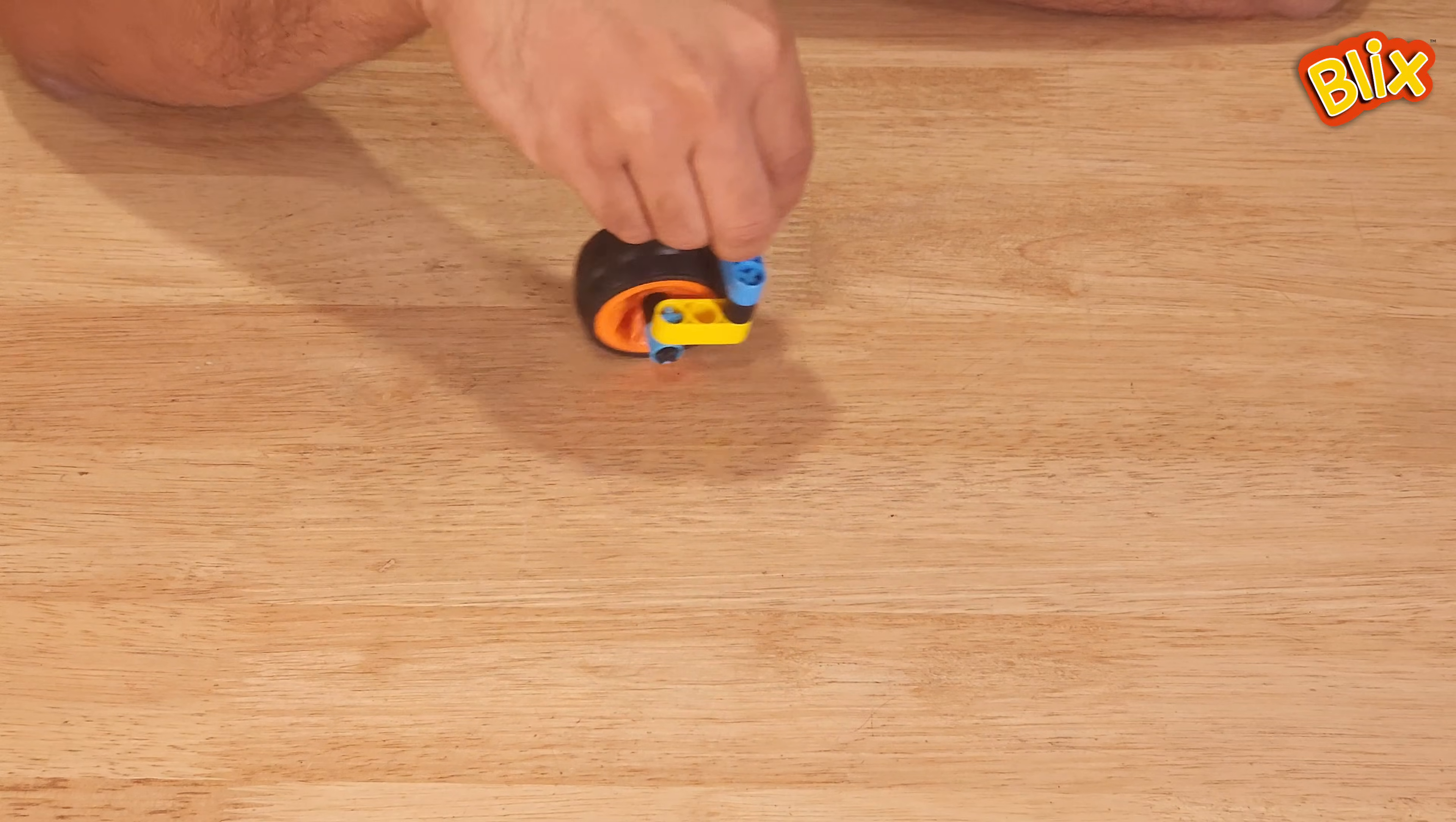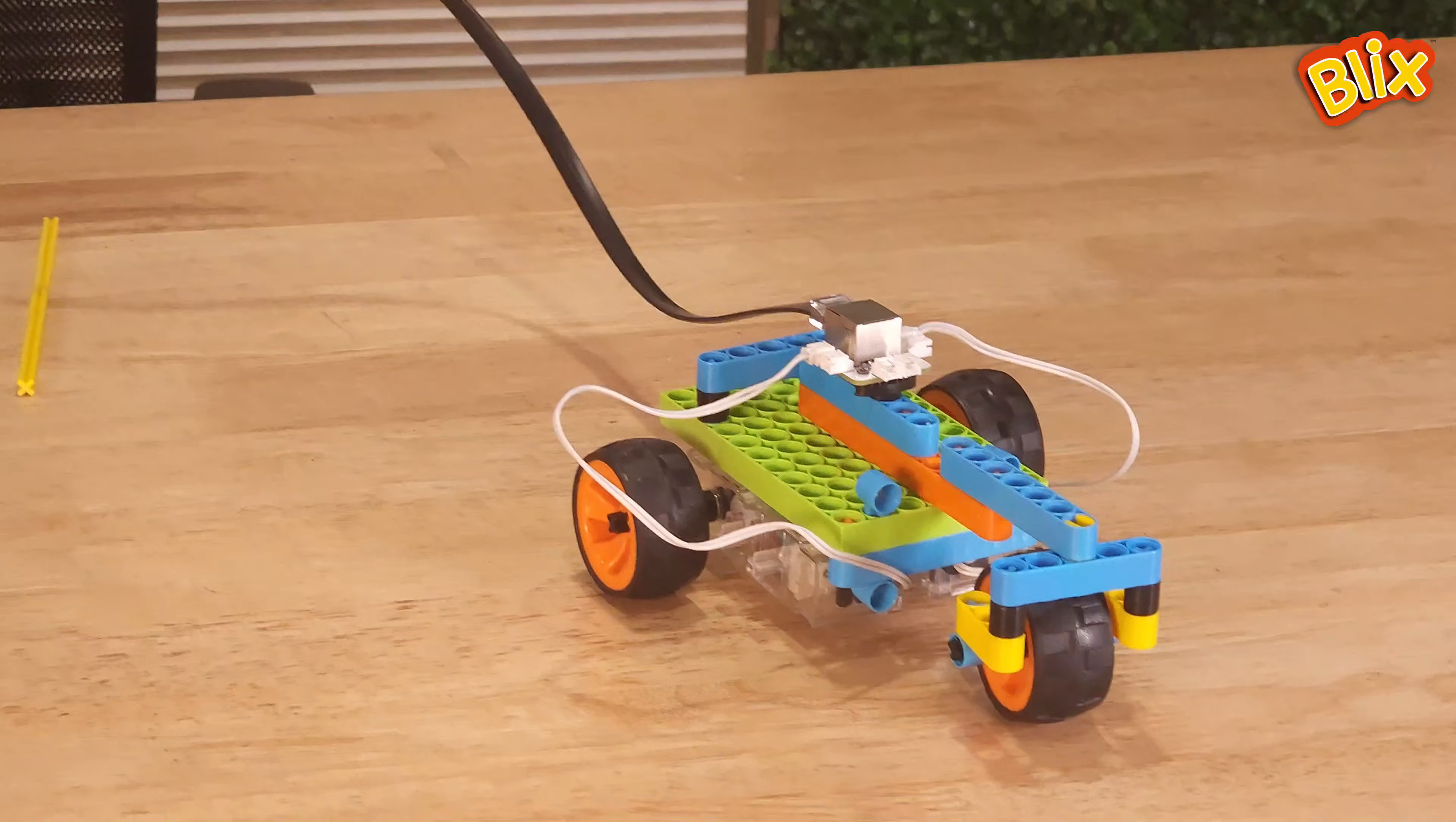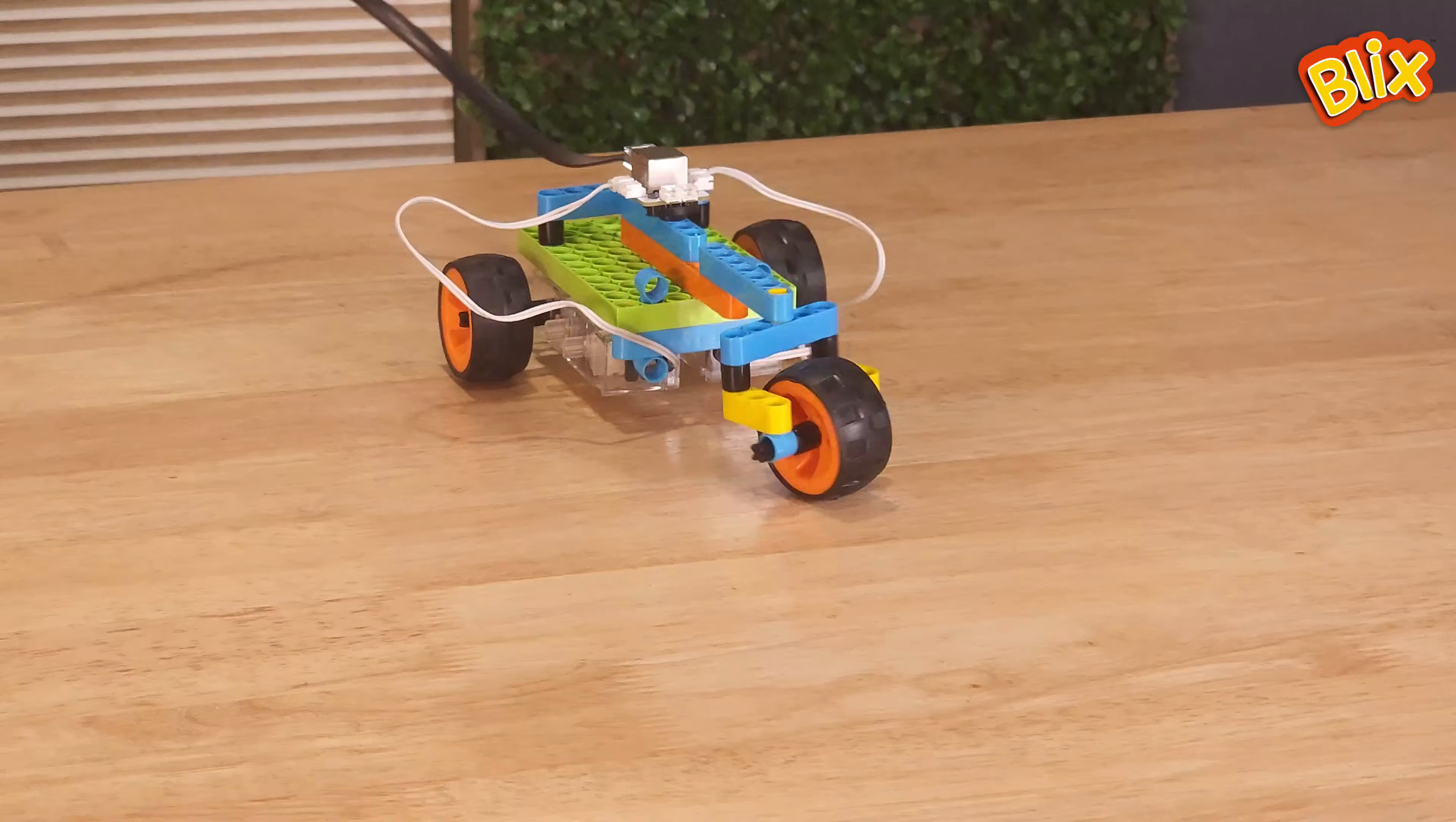Now with the help of this caster wheel, we are going to solve the problem that we faced earlier. So as you can see, because of caster wheel, you can see that the bot is moving freely. And it can take turns in any direction.